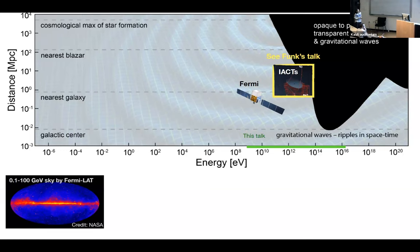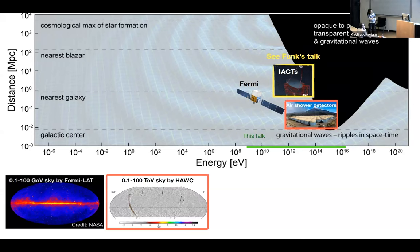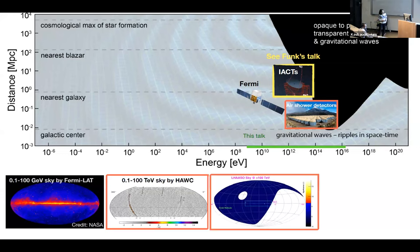Getting to higher energies, Stefan has given a great introduction about the two different techniques to observe gamma rays. One is the imaging atmospheric Cherenkov telescopes, and the other is air shower detectors. One of them in that picture is HAWC, which stands for High Altitude Water Cherenkov Observatory. This is a sky map observed by HAWC between 0.1 to 100 TeV energies. Most of the sources are sitting in the plane, and there are a few nearby extragalactic sources, but they are all really nearby galaxies.